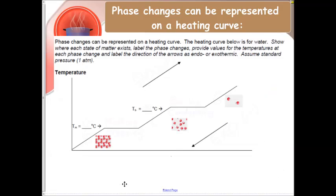Phase changes can be represented on a heating curve, and this is an example of a heating curve. So at the very bottom, this is a solid. Let's use water for example. Water is solid at zero degrees Celsius. And next would be the liquid state. And once we get to the boiling point at 100 degrees, this will convert to a gas.